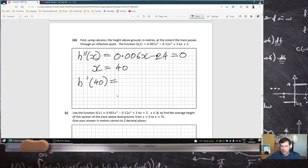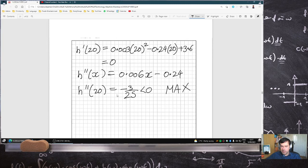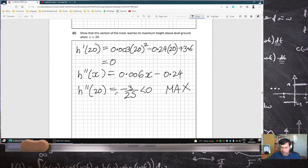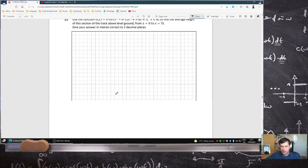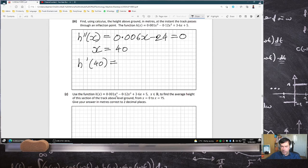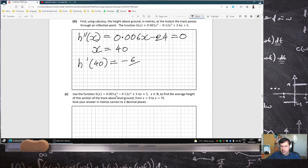So if I just calculate that, 0.003 times 40 squared minus 0.24 times 40 plus 3.6, that's minus 6 over 5, which is not zero. So therefore, the inflection point's height will be at the 40.